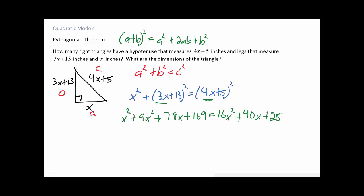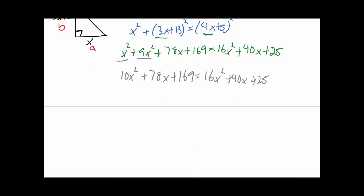I've got like terms all over the place with this. So here we got x squared and 9x squared is 10x squared plus 78x plus 169, and 16x squared plus 40x plus 25. Alright, so I want to bring all the terms on one side. It fits our quadratic procedure, so I'm going to subtract off 10x squared. I'm going to subtract off 78x, and subtract off 169. And so the 16x squared minus 10x squared is 6x squared. 40 minus 78 is minus 38x, and 25 minus 169 is negative 144.